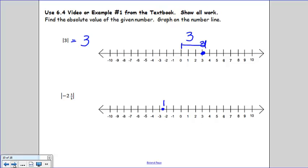The distance from negative 2 and a half to 0 is 2 and a half units. So that means that the absolute value of negative 2 and a half is 2 and a half.